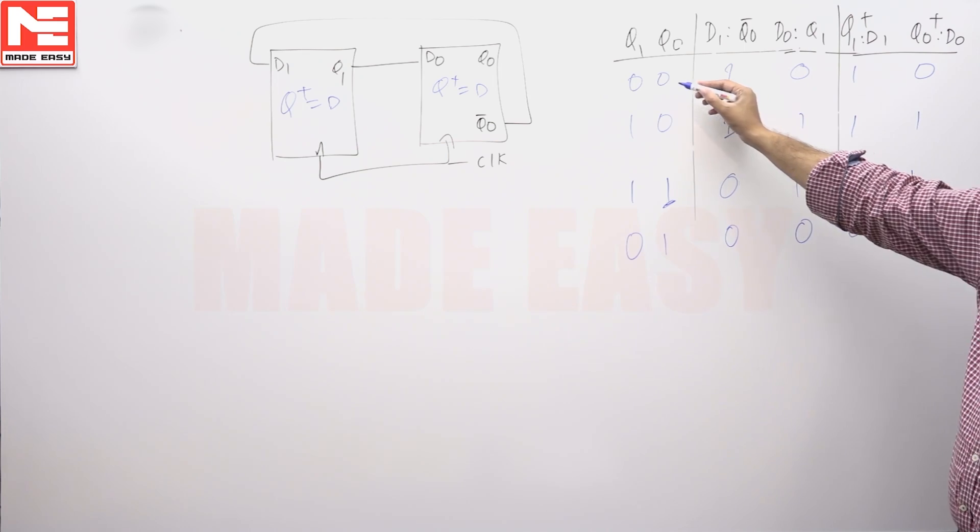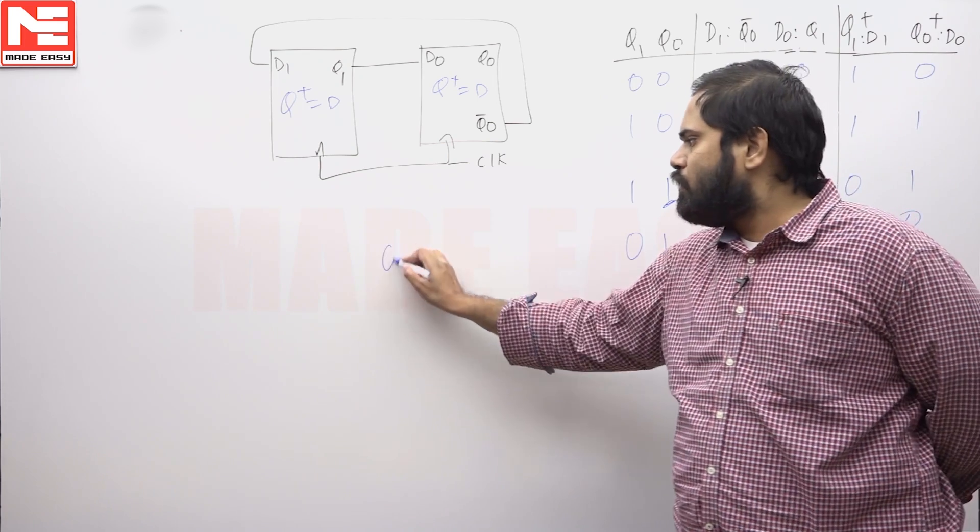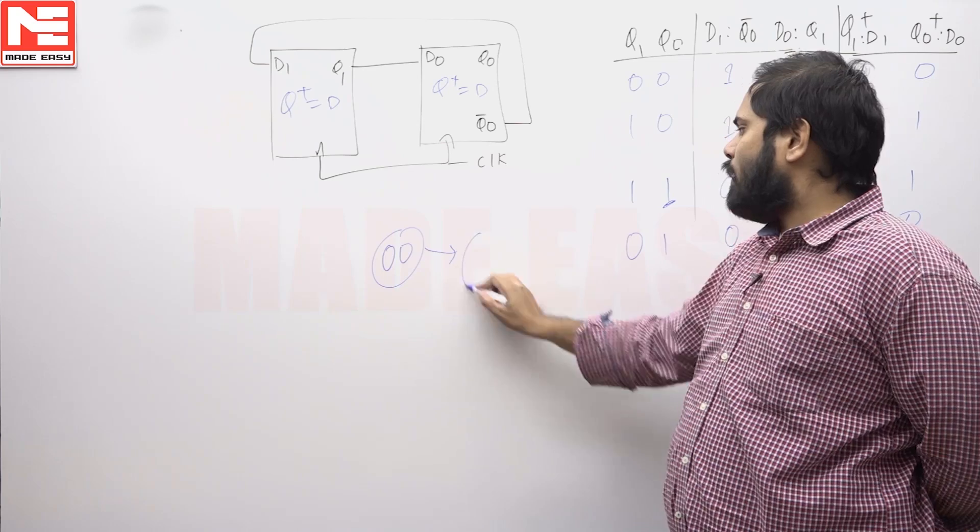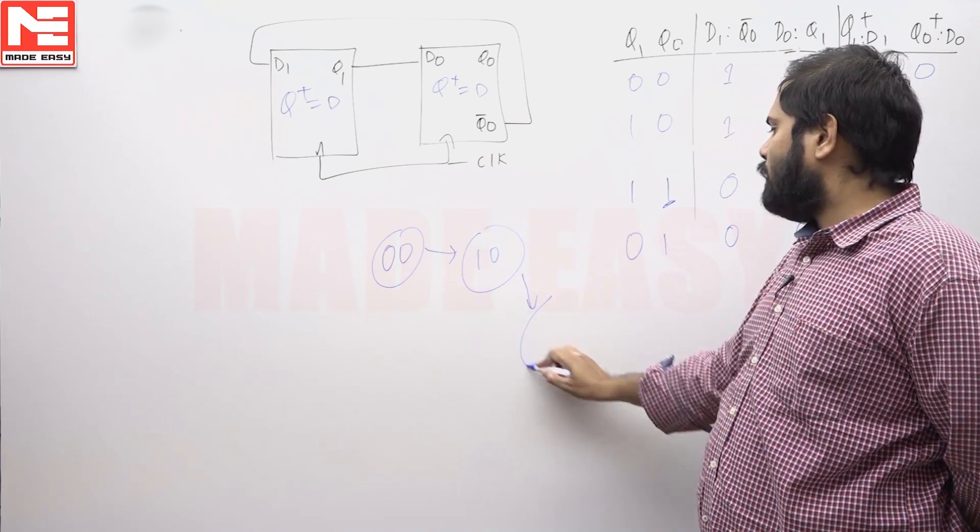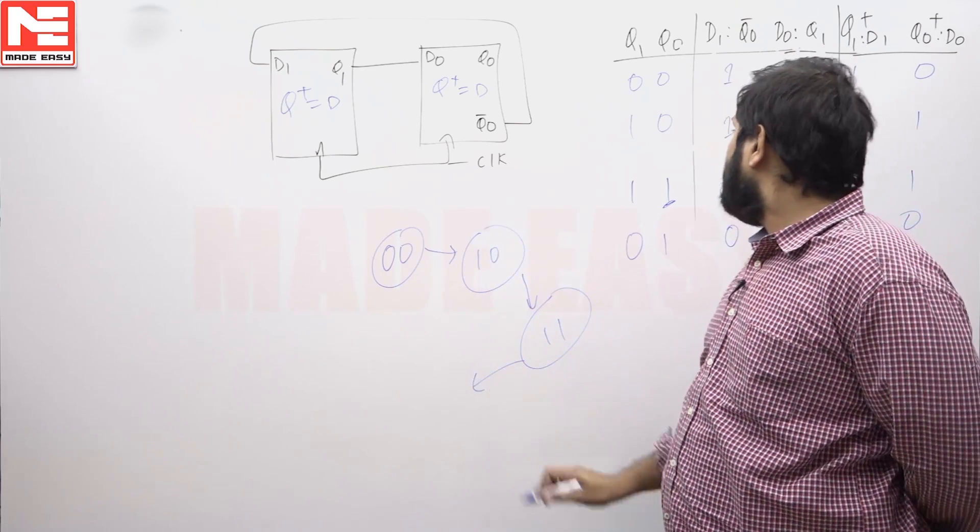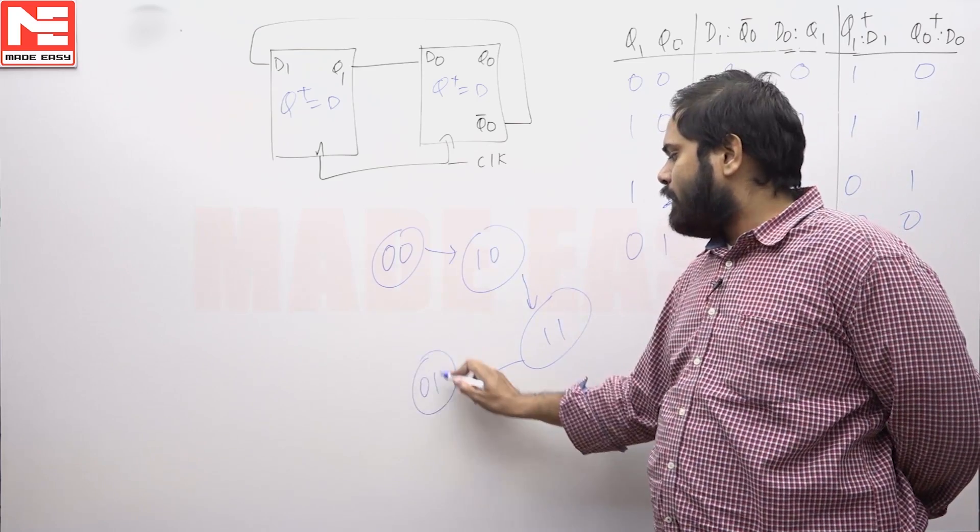So I started from 00, I came back to 00, so in 4 clock cycles. So if you see here 00, the next state is 10. For 10 is 11, 11 it is nothing but 01, 01 it is nothing but 00.